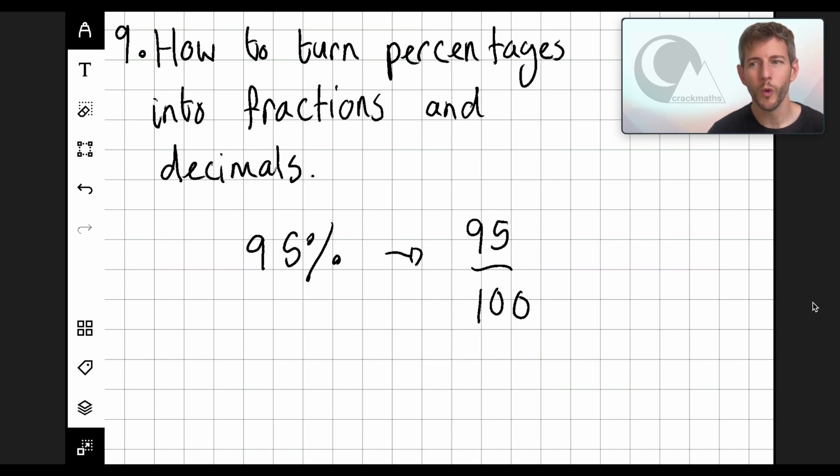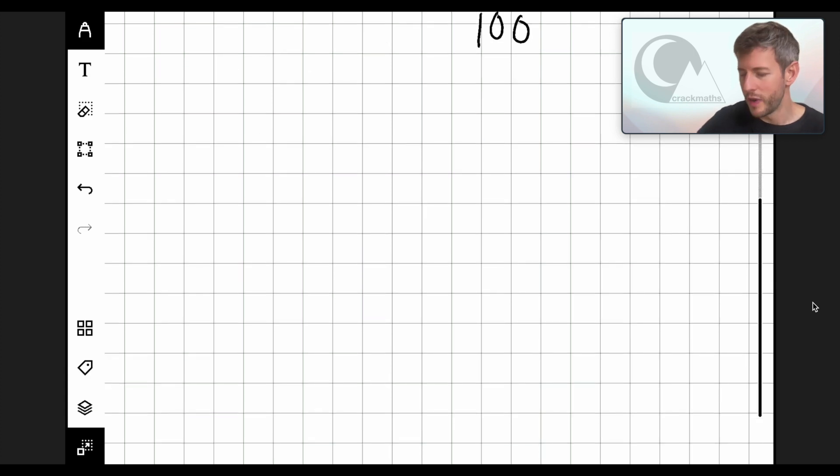So we've already turned our percentage into a fraction. Let's have another go. Let's say we have 5%. Now remember, percent means out of 100. So as a fraction, 5% is 5 out of 100.